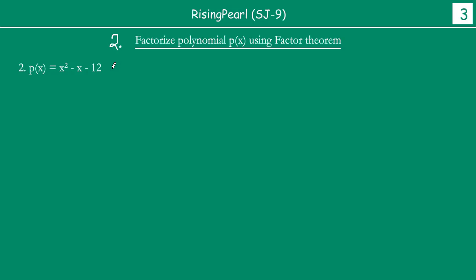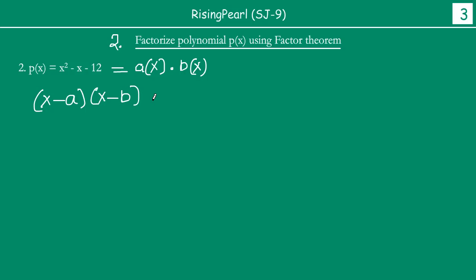Our goal is to find out the two factors. We want to write it in the form of A(x) times B(x). Let us assume that a and b are the roots of the polynomial p(x). Then x minus a and x minus b will be the two factors of p(x). Multiplying them, you should get the polynomial p(x), which is nothing but x squared minus x minus 12.